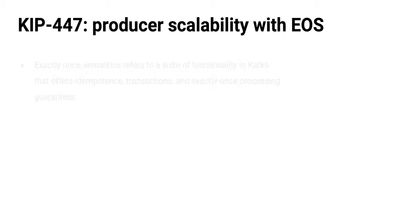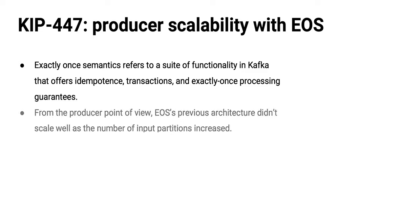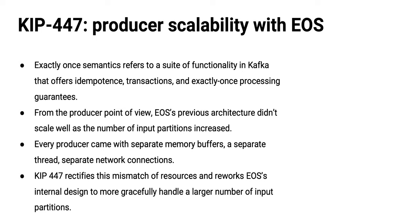KIP-447 is an improvement to the scalability of Kafka Streams applications with exactly-once semantics enabled. A Streams application dealing with a large number of source partitions on an input topic could have scalability issues in terms of memory usage in the Streams cluster. KIP-447 makes that work better. If you've got a big input topic and a beefy Streams application, you might see better results now — check it out.